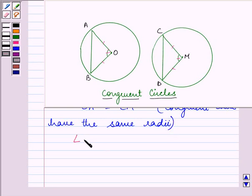Then, we are also given that angle AOB is equal to angle CMD. It is given to us in the question.